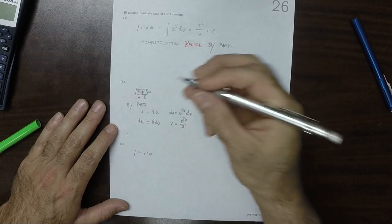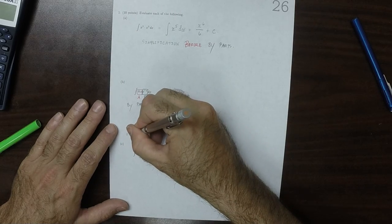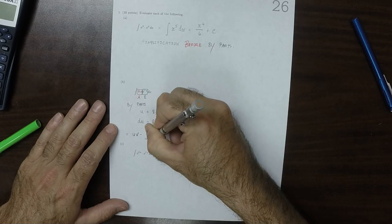So the right-hand side of by parts, in terms of u and v, is uv minus antiderivative vdu.